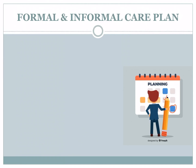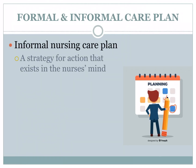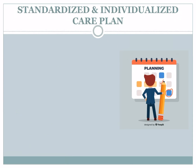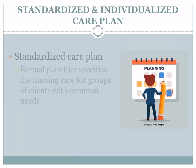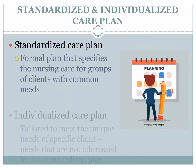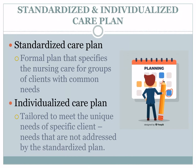There are two types of care plan: formal and informal. An informal nursing care plan is a strategy for actions that exists in the nurse's mind. A formal nursing care plan is a written and computerized guide that organizes information about the client's care. There is also a standardized and individualized care plan. A standardized care plan is a formal plan that specifies the nursing care for groups of clients with common needs, while the individualized care plan is tailored to meet the unique needs of a specific client — needs that are not addressed by the standardized plan.